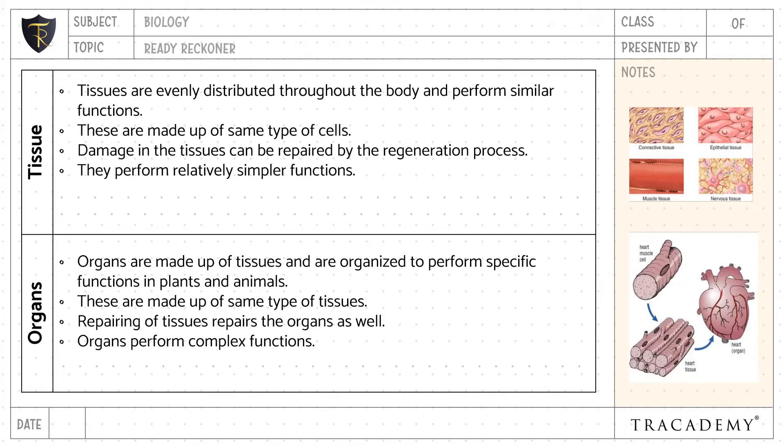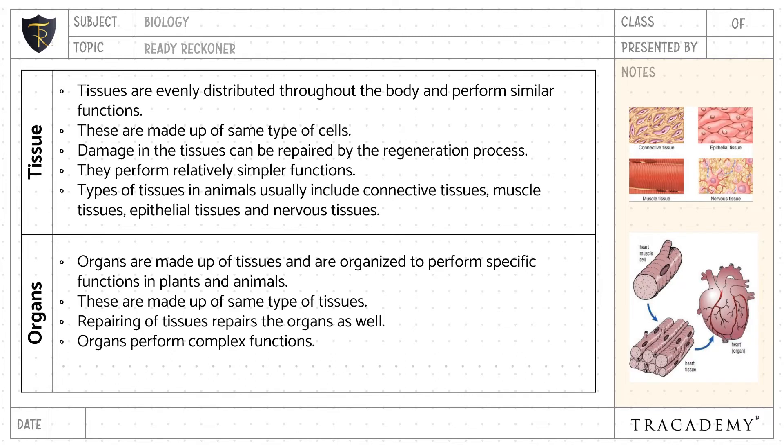Types of tissue in animals usually include connective tissue, muscle tissues, epithelial tissues, and nervous tissues.